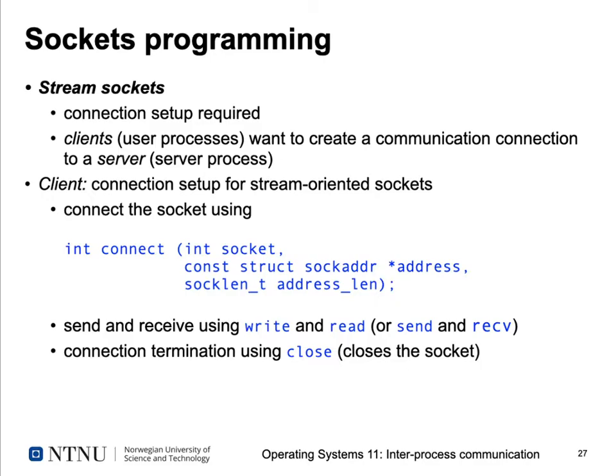For stream-oriented communication you use stream sockets, which require a connection setup because the computer needs to know when the connection is established and when it's terminated. Usually there's a client and a server. The client sets up a connection to the server using the connect system call, passing the socket, the address in a sockaddr struct, and its length. Then you can send and receive over that socket using read and write system calls, or specific send and receive calls, and terminate the connection using close.